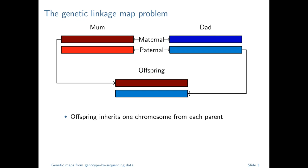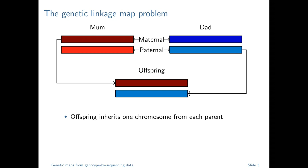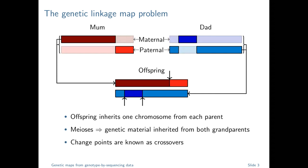To understand what these are, we need some idea of inheritance. The picture most of us have in mind is: the offspring gets one chromosome from mum and one from dad. For both mum and dad, the darker color is the chromosome from the maternal grandparent and the lighter color from the paternal grandparent. But that picture is a little too simple.